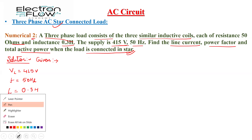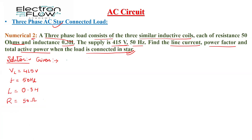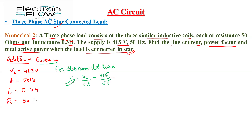For the star-connected load, the per-phase voltage is given by Vp = Vl divided by root 3. So the phase voltage is 415 divided by root 3, which gives us 239.6 volts.